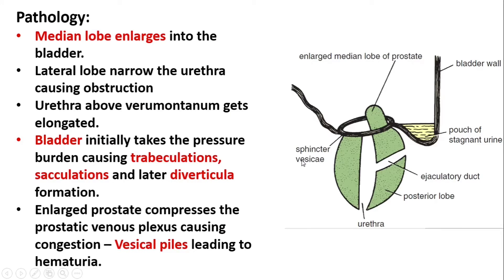What are the consequences that occur because of this condition? The median lobe enlarges into the bladder as shown in this figure. The lateral lobe narrows the urethra causing obstruction. The urethra above the verumontanum gets elongated. The bladder, because of BPH, will initially compensate by itself, leading to trabeculation and cellulation, and later on diverticular formation. The enlarged prostate will also compress the prostatic venous plexus, leading to vesical piles that might cause hematuria.